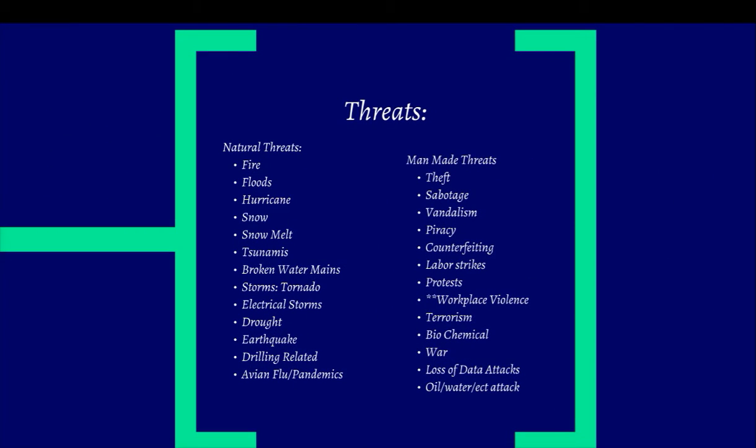I took a look at some lists of threats — natural and man-made. Fire, flood, hurricane, snow, snow melt, tsunamis — unfortunately more common today because of weather condition changes. Broken water mains, which I've seen destroy businesses many times, same as tornadoes. Droughts can do the same — think about how a drought would influence the farming market and the stock markets. Out west is where we get all our fruits and vegetables, and right now there is low water.